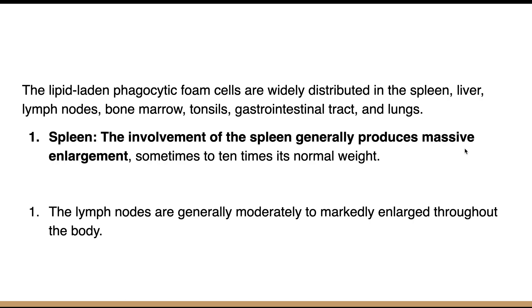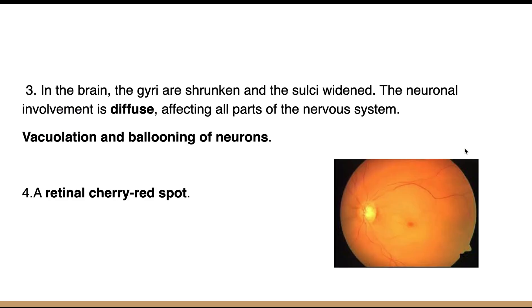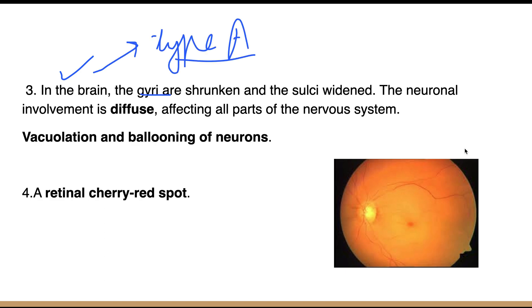Looking at specific organ involvement: the spleen is massively involved, sometimes reaching around 10 times its normal weight. The liver is involved but hepatomegaly is not as striking. Lymph nodes are also enlarged. In the brain, specifically in type A, the gyri are shrunken, the sulci are widened, and there is neuronal involvement with vacuolation and ballooning of neurons, leading to CNS symptoms.